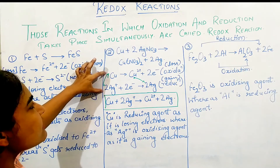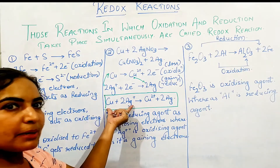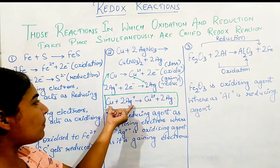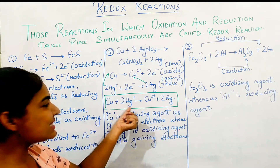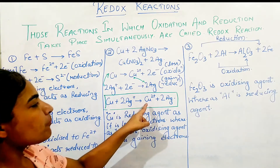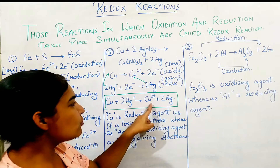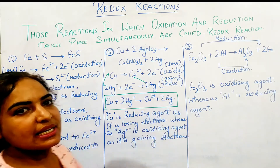The reaction is: copper is added to 2Ag⁺, giving Cu²⁺ and 2Ag.